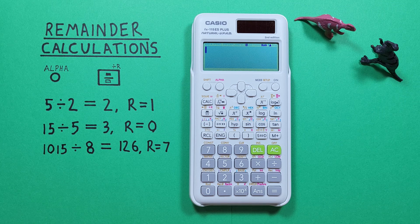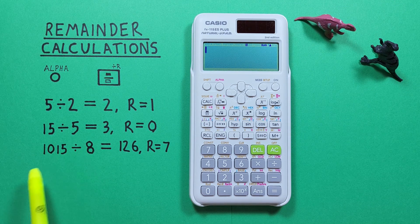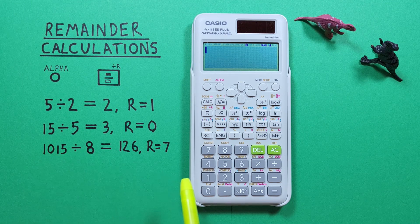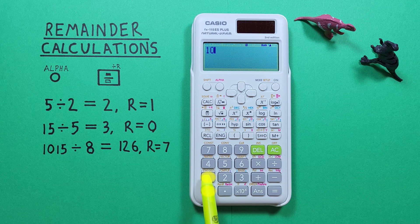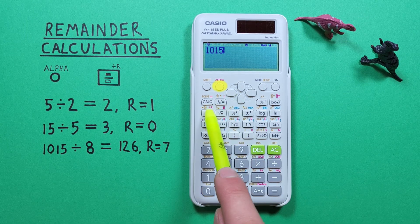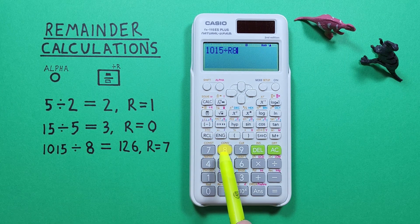Let's look at a bigger number. How many times does 8 go into 1015? Again we start by entering the first number, so 1015, alpha, remainder, and then 8, and press equals.